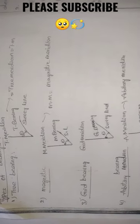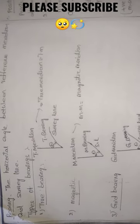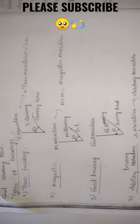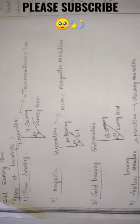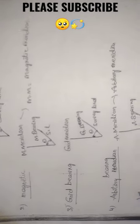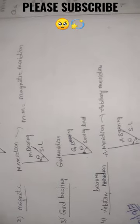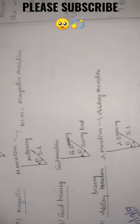We have four types of bearing. Whenever the reference meridian is changing, the bearings will also change. When it is true meridian, it is true bearing. Magnetic meridian gives magnetic bearing. Grid meridian gives grid bearing. And arbitrary meridian gives arbitrary bearing.